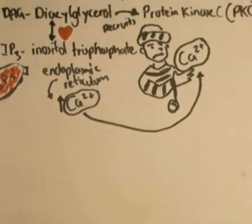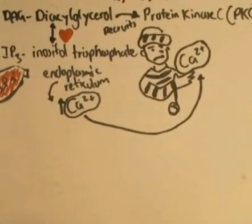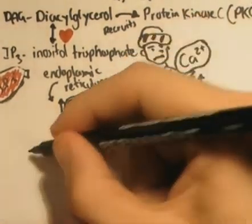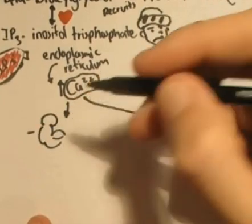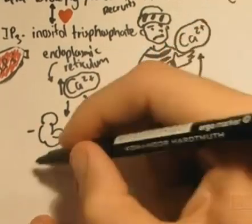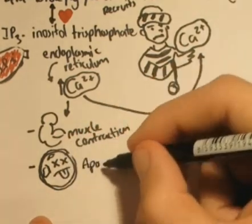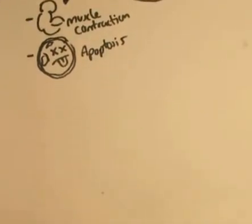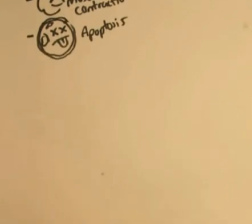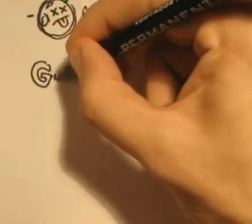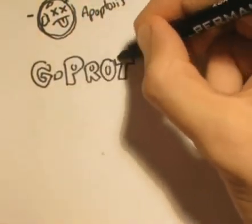It is also interesting to note that calcium ion is also a second messenger. A rising concentration of calcium ions in the cytosol triggers many types of events, such as muscle contraction and even apoptosis. This presentation was on G-proteins. Please comment and provide feedback. Thank you.